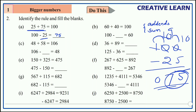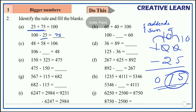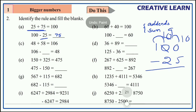That is the rule: when we add two numbers, those numbers are called addends. When we subtract one addend from the total sum, we get the remaining addend. Let's fill all the blanks using this rule.